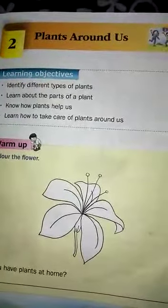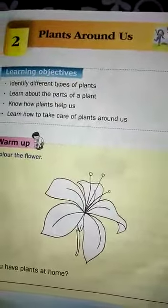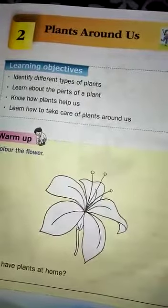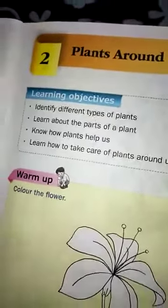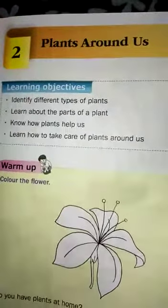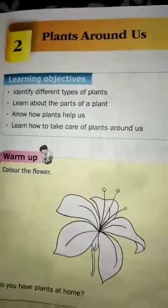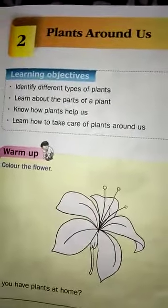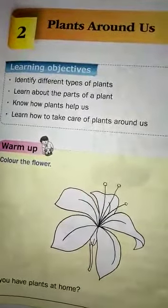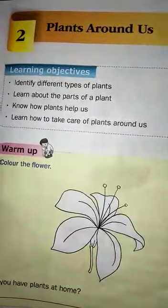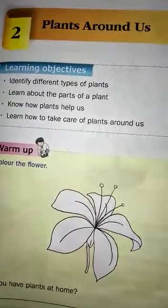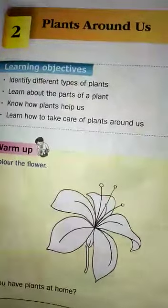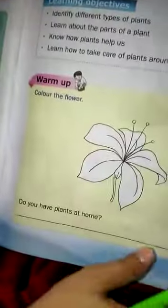Hello students, how are you all? Hope you are studying well. Today I am going to start our second chapter from the second term syllabus and it's plants around us. Hope you have already seen my first video where I explained the first chapter. So, what are the objectives of this chapter? In this chapter, we are going to learn the different types of plants, different parts of plants, how plants help us, and how we should take care of plants. Now let's start the chapter.